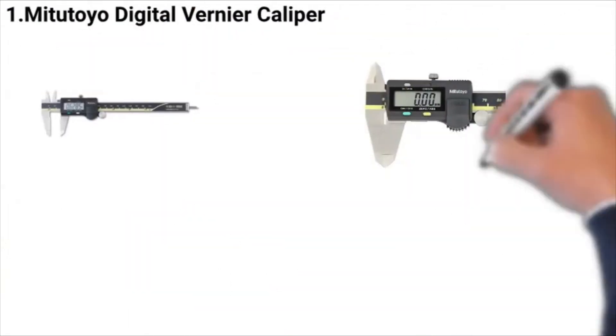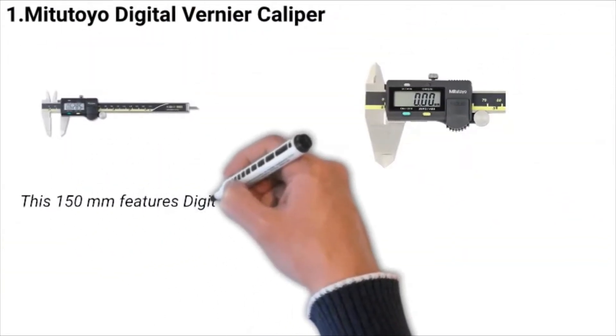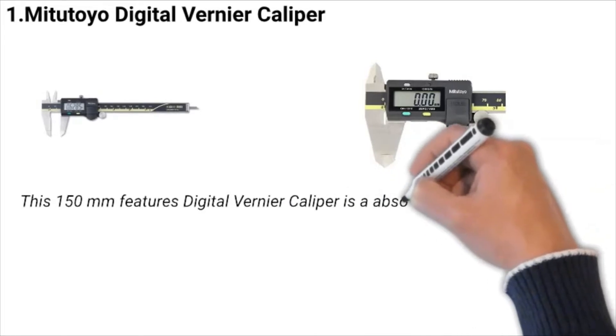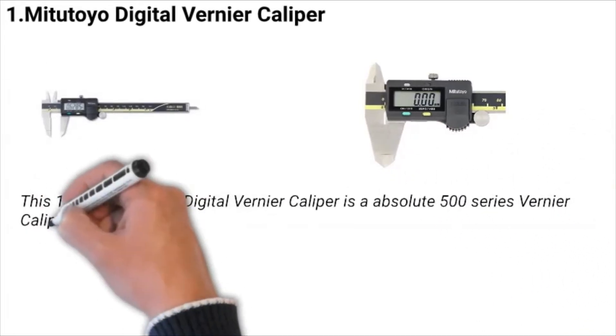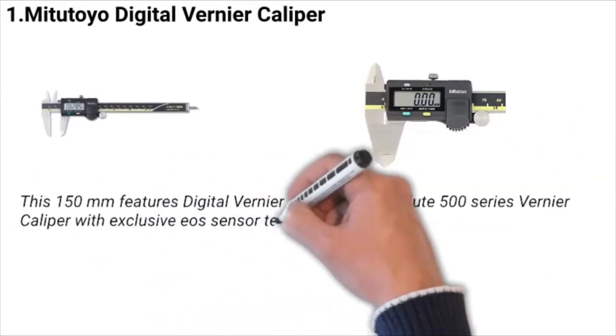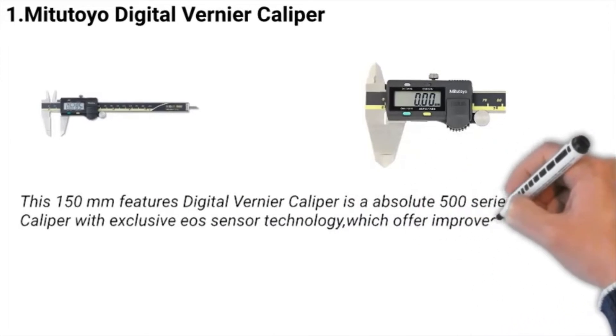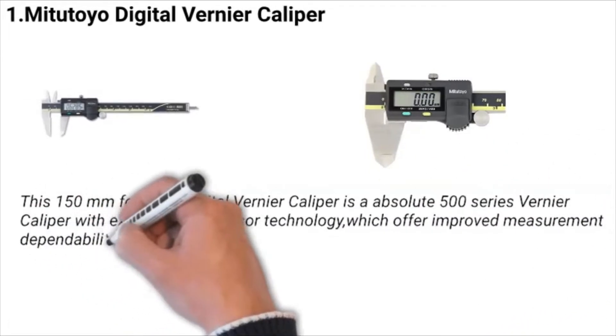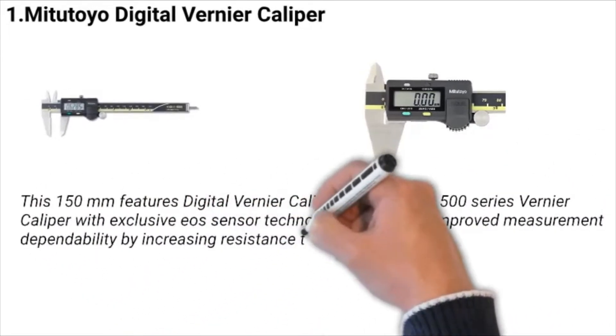Number one: Mitutoyo Digital Vernier Caliper. This 150mm precision digital vernier caliper is an Absolute 500 Series vernier caliper with exclusive ABS sensor technology, which offers improved measurement dependability by increasing resistance to harsh workshop conditions.